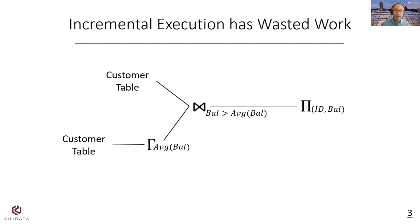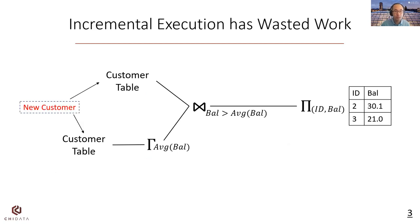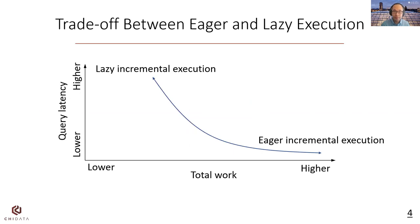Consider this query as an example. It first computes the average balance for all customers, and then uses a join operator to find all customers with a balance that is higher than the average one. If a new customer is inserted and the average balance is updated, the query needs to rescan the customer table to find the new set of customers that meets the new join condition. If we want to maintain this query eagerly, for every new customer, we have to repeatedly rescan the customer table and remove prior output tuples, which means eager incremental execution can increase the total work.